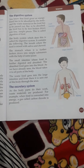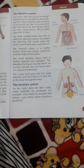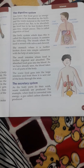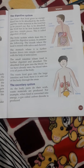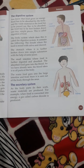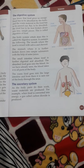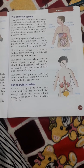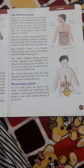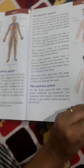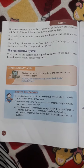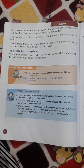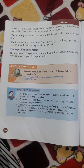What is the excretory system? As the body parts do their work, waste material is produced. For example, when food is converted into energy, carbon dioxide is produced. This waste material must be removed from our body. If we don't remove the waste material, it will harm us. This work is done by the excretory system.